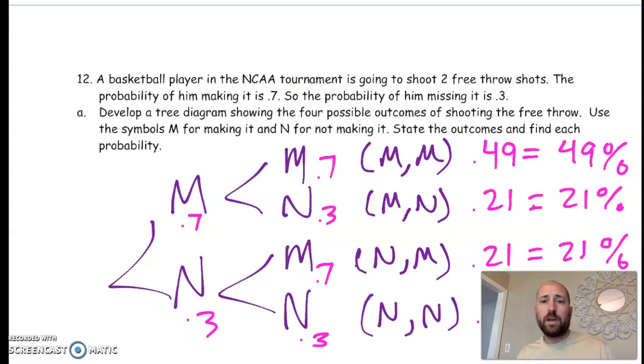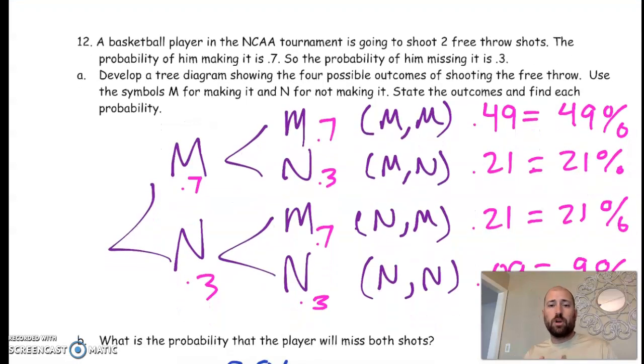Okay, so if you have a problem like this, what you're going to do is draw the tree diagram, list out the sample space, write in the different probabilities, and then multiply and find the probability of each member of the sample space. Sounds sweet.